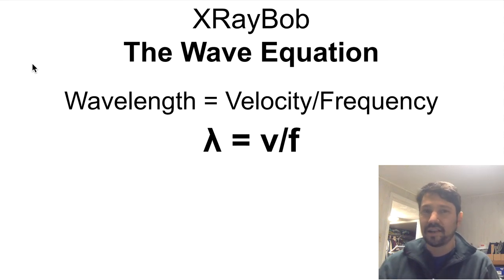Hello, it's X-Ray Bob here and today we're going to go over the wave equation. The wave equation is wavelength, shown by lambda, equals velocity divided by frequency. Velocity shown by v or sometimes the Greek character nu, and frequency shown as f.